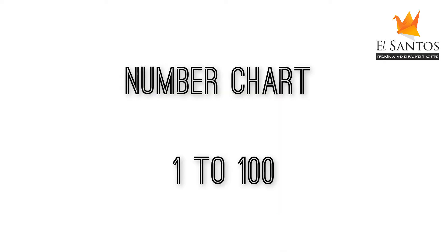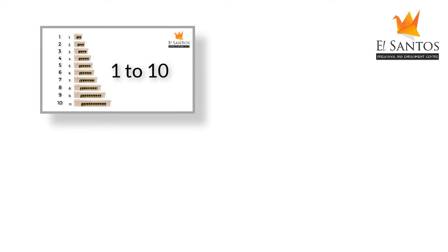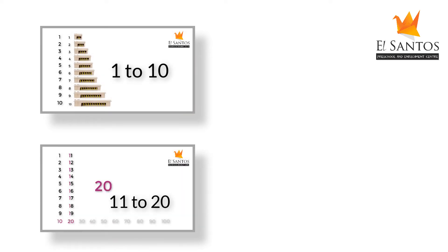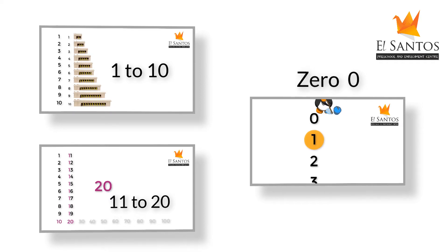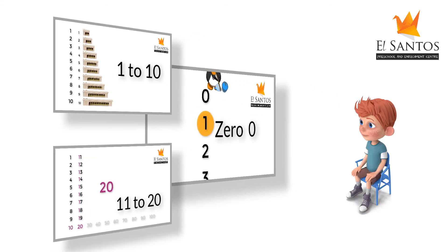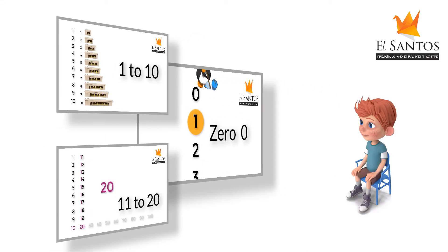This video is a follow-up or continuation of the videos on how to write 1 to 10, 11 to 20, and Mr. Zero. The number concepts and values for numbers 1 to 20 are presented in detail in those videos. I have provided the links in the description below. I suggest you watch them with your children first and then come back and continue with this one.